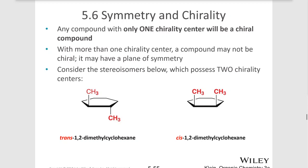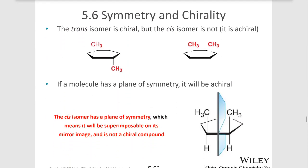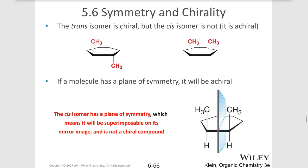We have here trans-1,2-dimethylcyclohexane and cis-1,2-dimethylcyclohexane. Notice the trans isomer is chiral. What if we drew the enantiomer for this molecule? We're going to draw its mirror image. I'm going to swap the configuration at each chiral center, and I can do that by swapping any two substituents at that center.